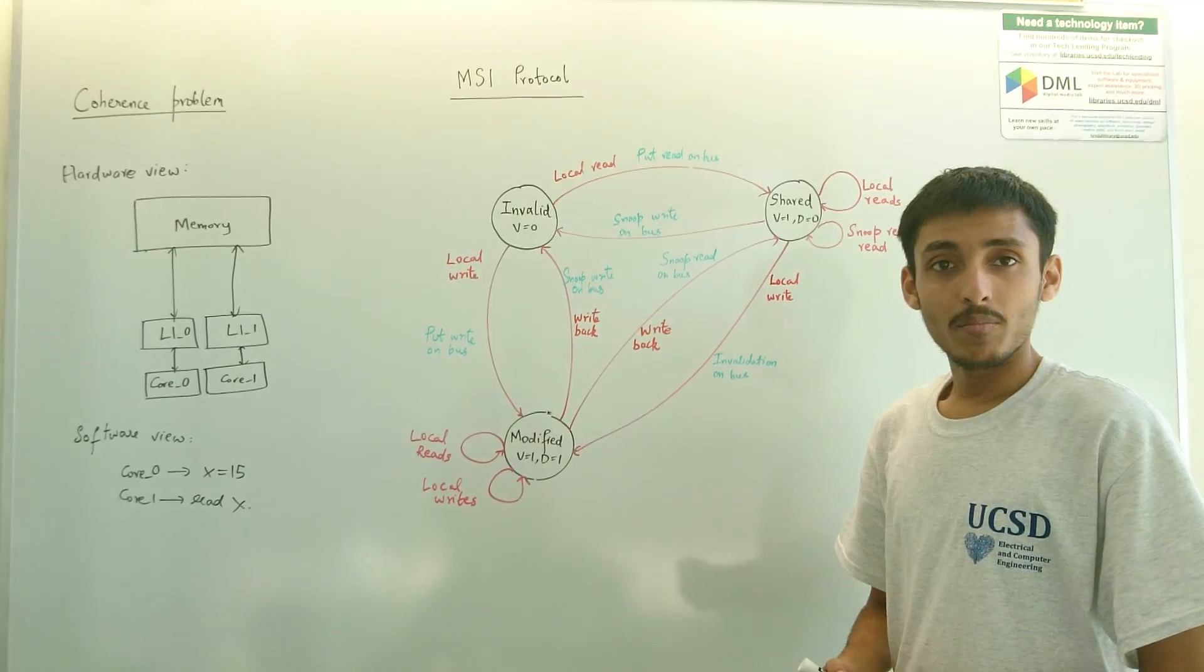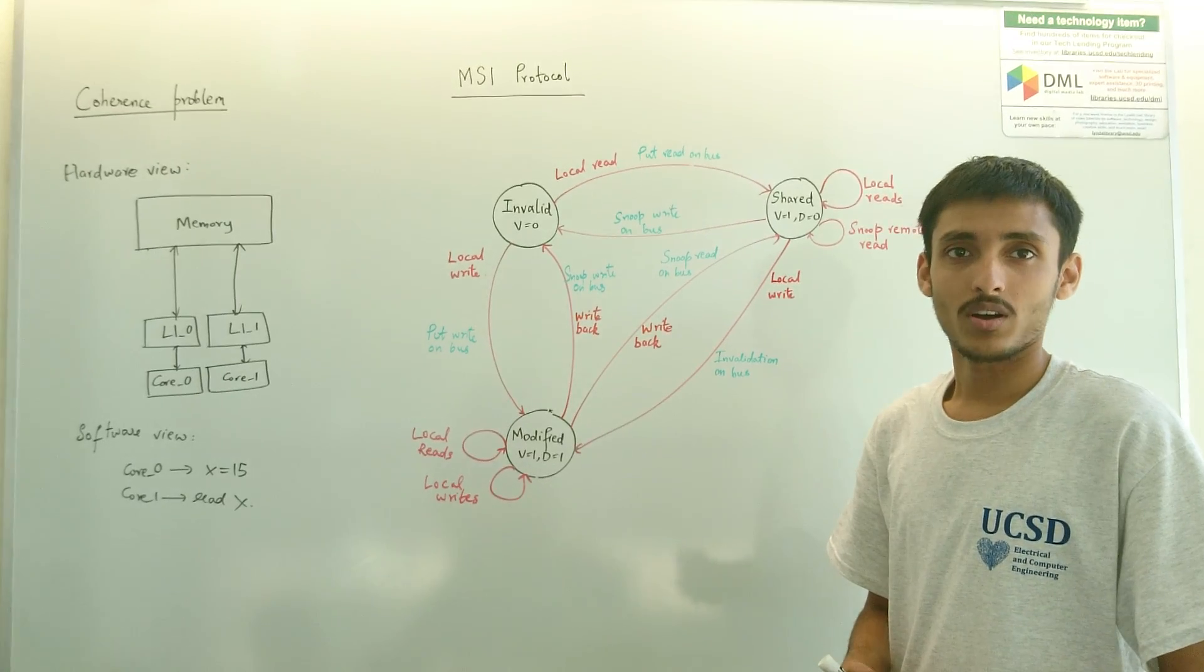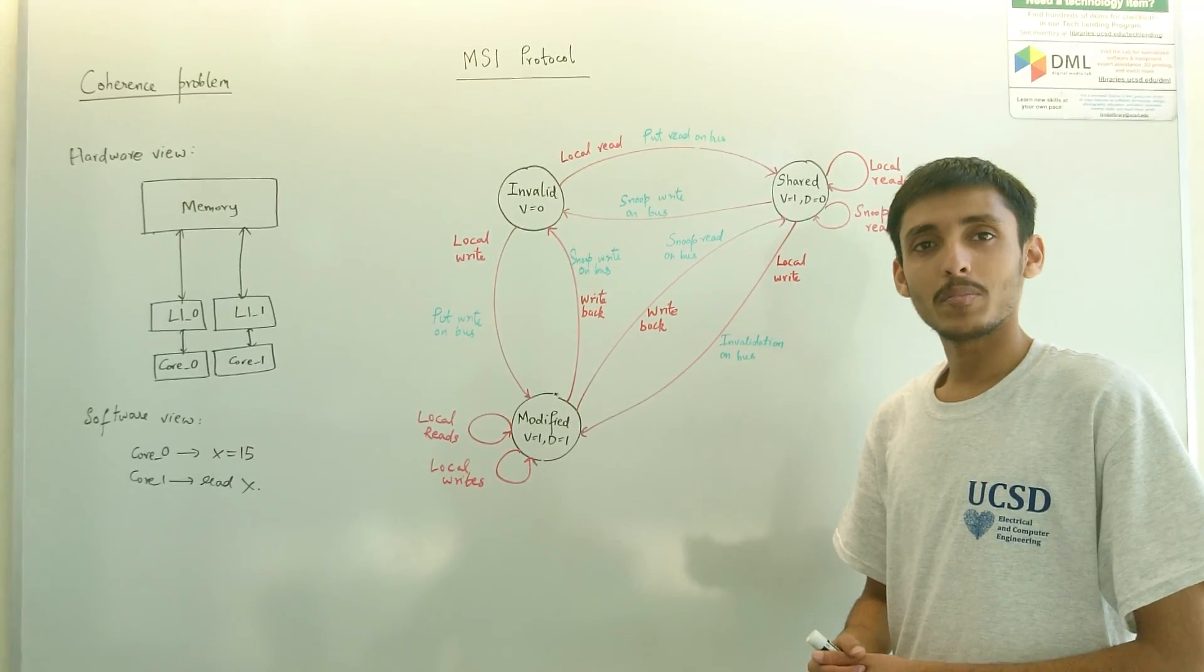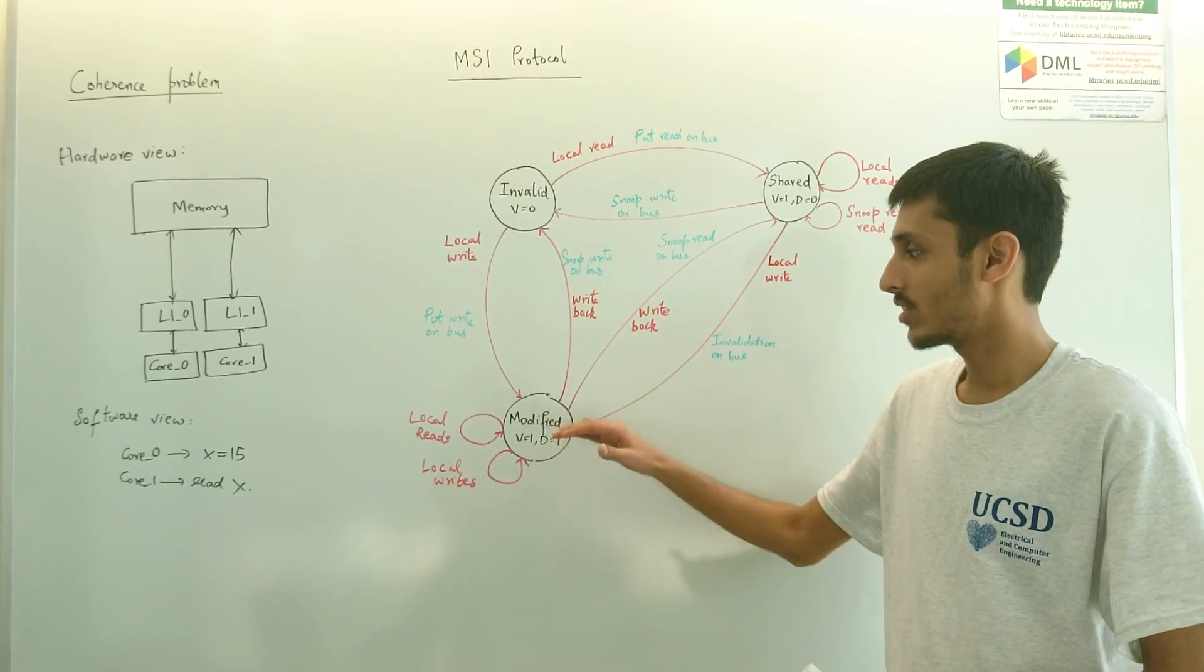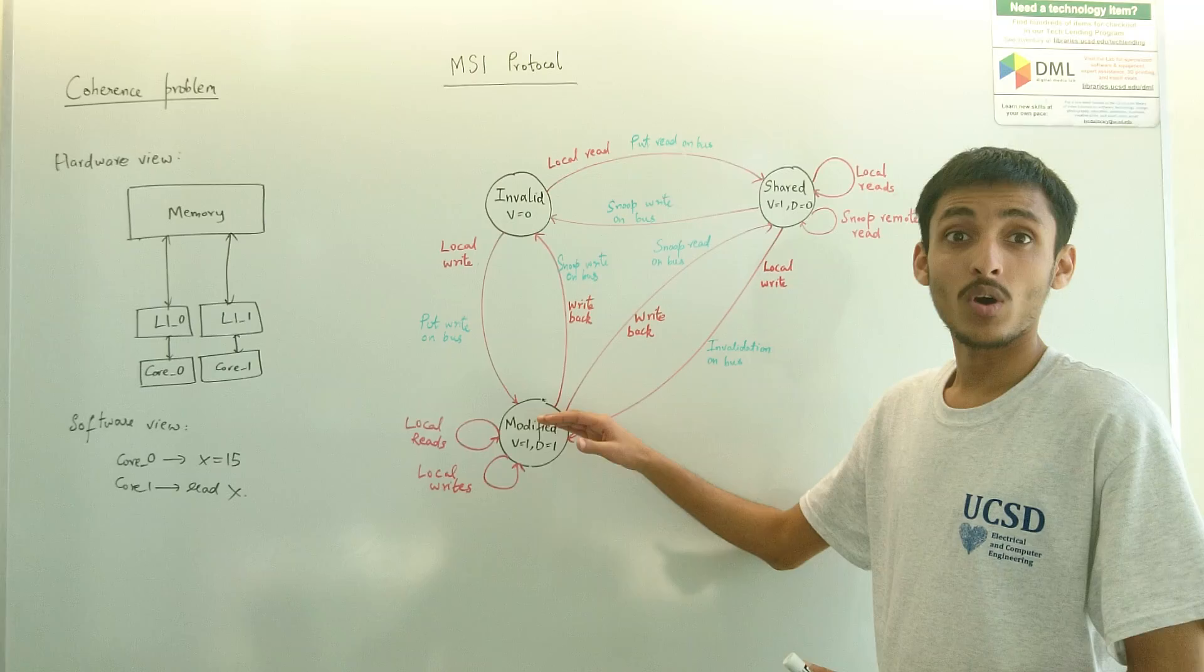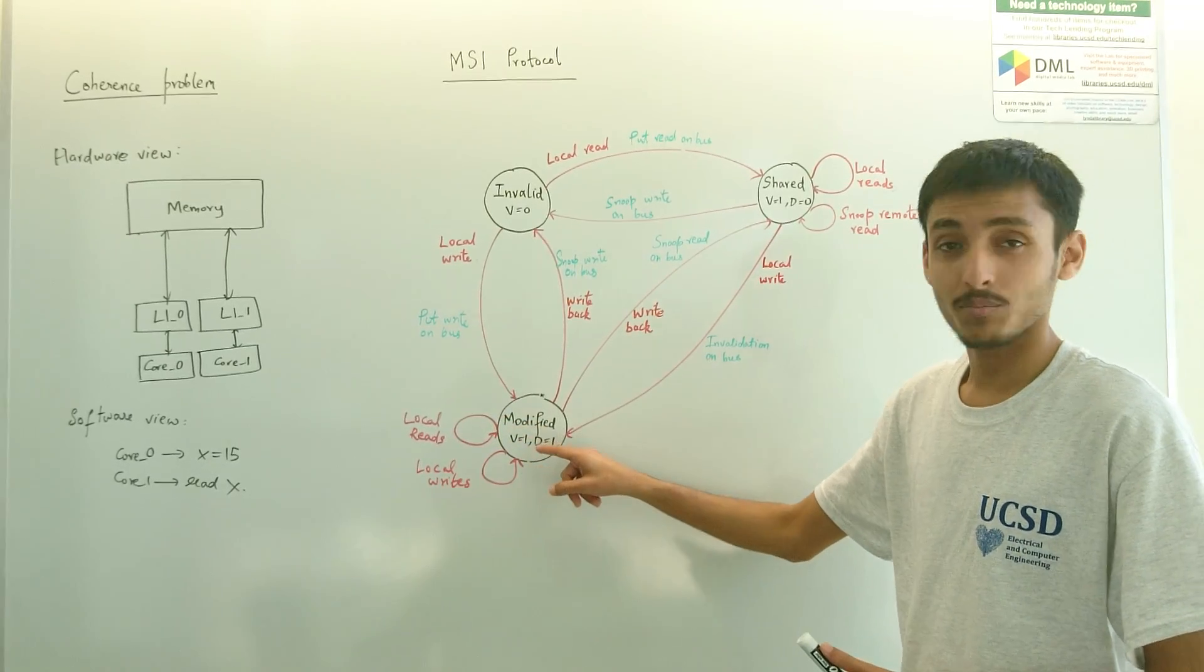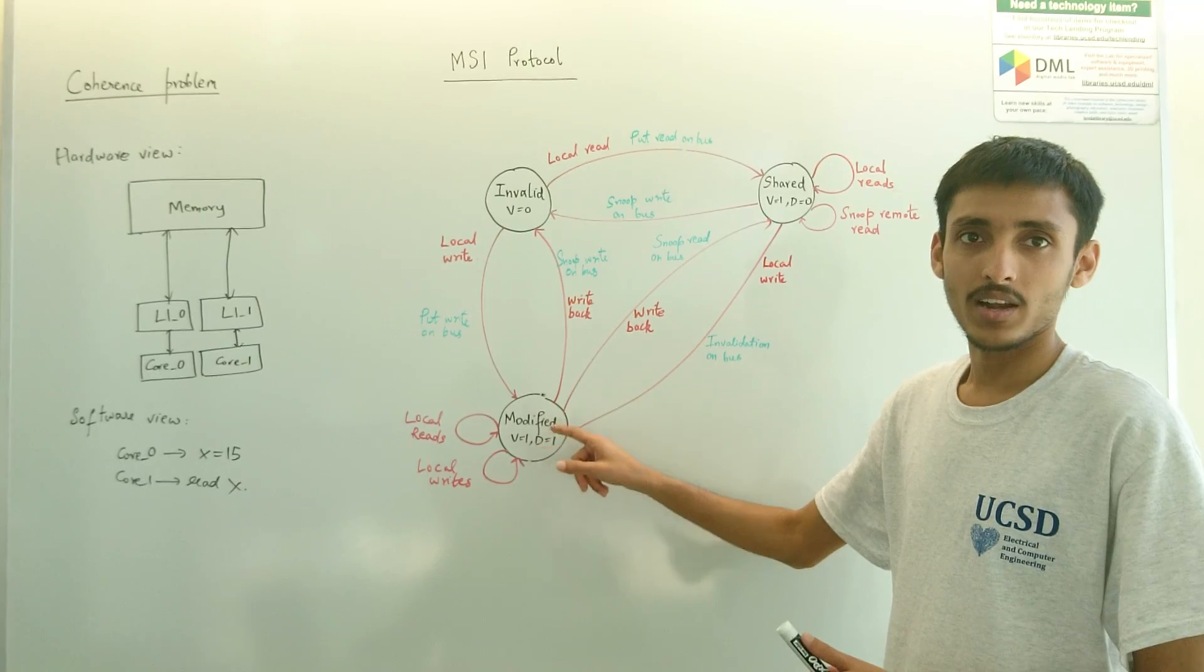A modified line basically has a valid bit as 1 and a dirty bit as 1. The valid bit as 1 means that the line is present in the cache and a dirty bit as 1 means that the dirty copy of the line, that is the latest fresh copy of the line, is present with this cache only. When the dirty bit is 1, it's always only one processor that has this line and nobody else would be having the same line. This ensures that local reads and local writes from this processor can happen seamlessly because it is having the latest copy.